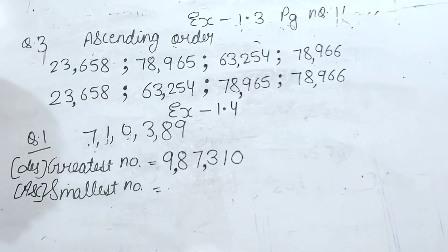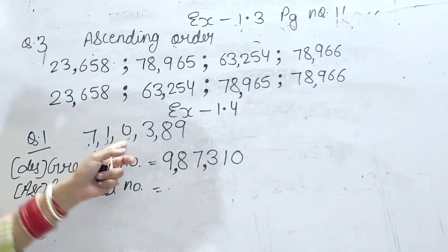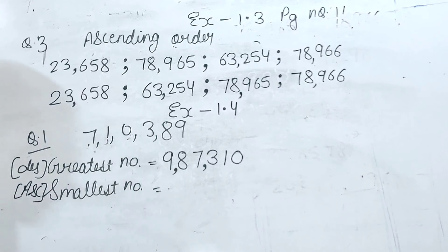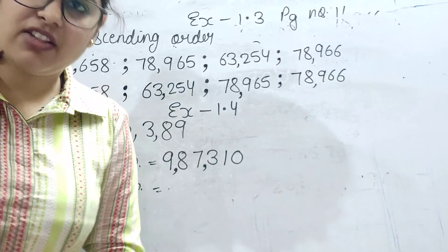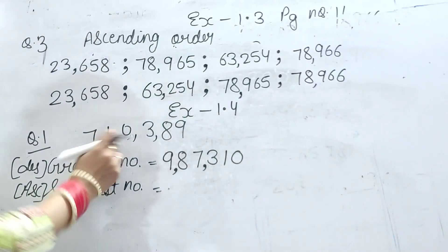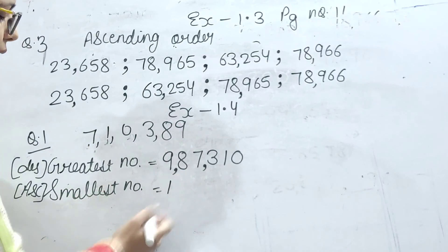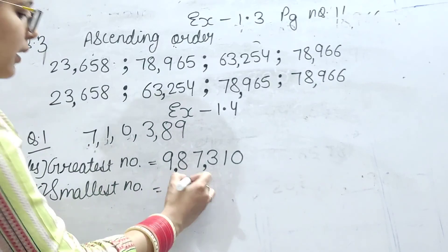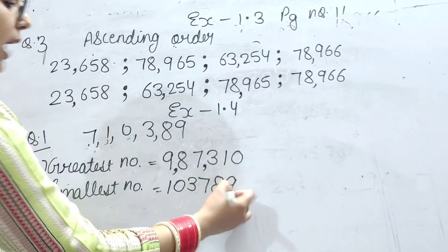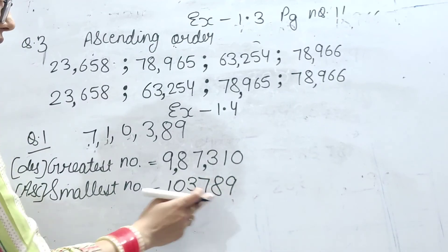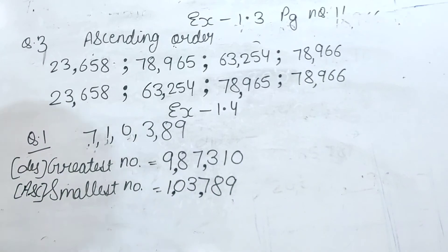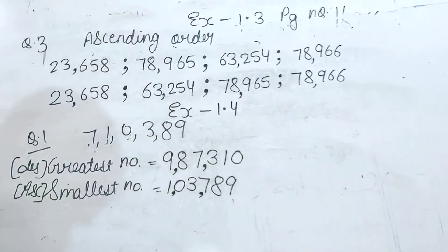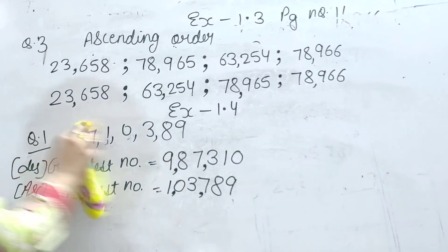Lekin agar smallest number banana hai aur digit mein zero bhi hai, to smallest number banate time zero humesha second place pe aata hai. Zero humesha kaun si place pe aayega? Second place pe. To we'll start from 1, then 0, then 3, 7, 8, 9. Comma lagate hain accordingly. Is tariqe se hum greatest aur smallest number banate hain.